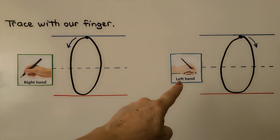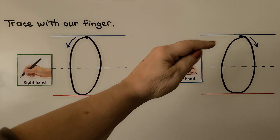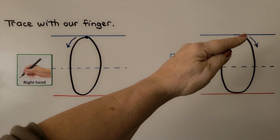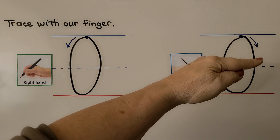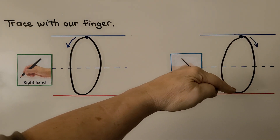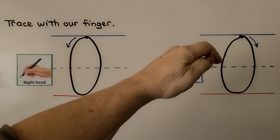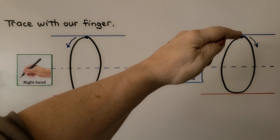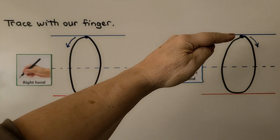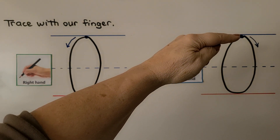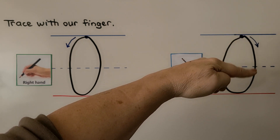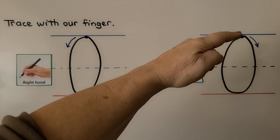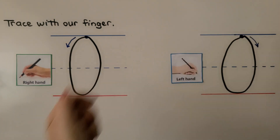For the left-handed students, we start at the top. We go away from our hand around, back towards our hand, and then up to the top. Let's try it again. We start up here, we go away from our hand, back towards our hand, and back up to the top.